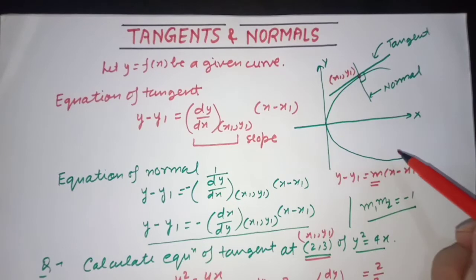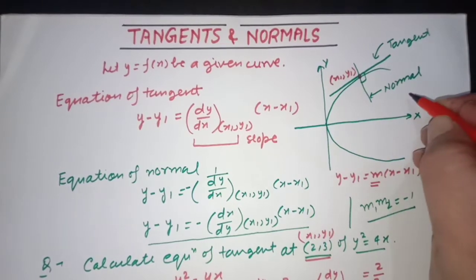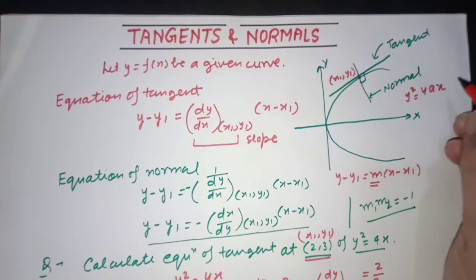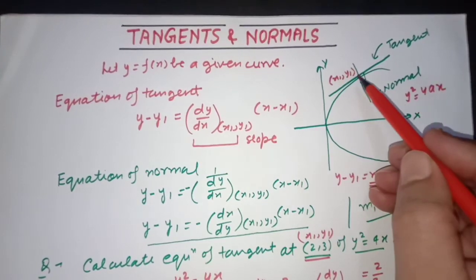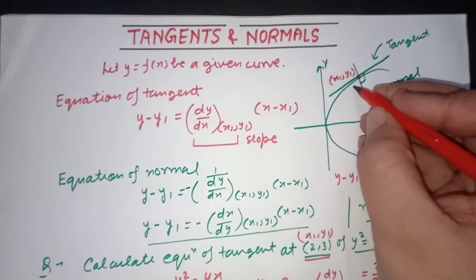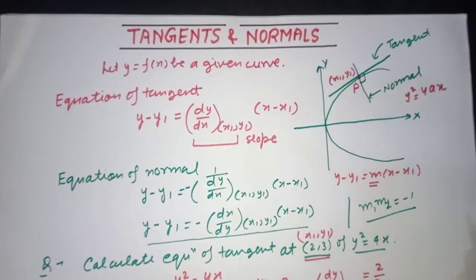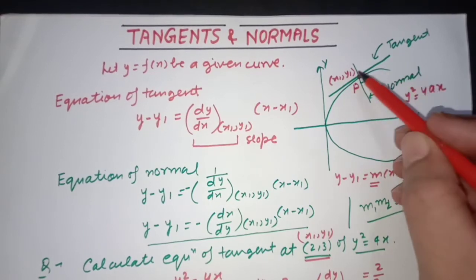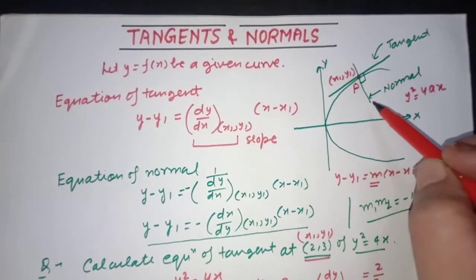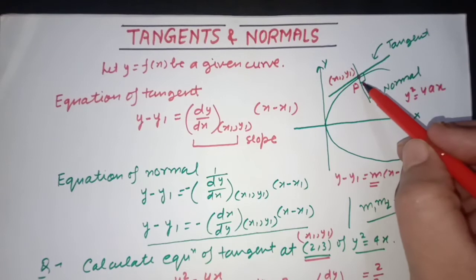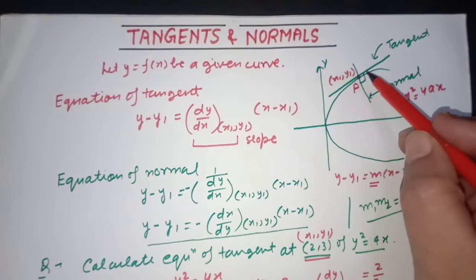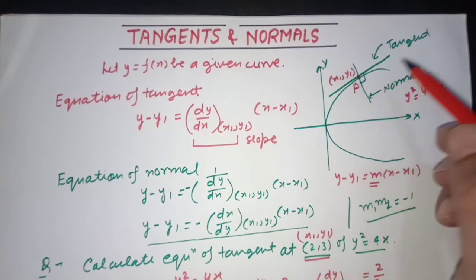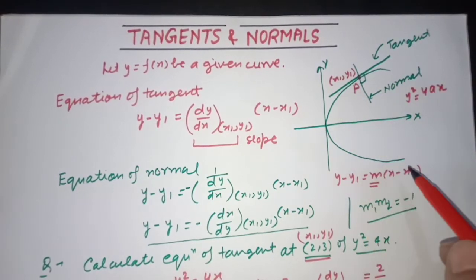Suppose we have a curve in the diagram — it is a parabola whose equation is y² = 4x. We see a point P whose coordinates are (x1, y1). At this point, one line is the tangent and another is the normal. Tangent and normal at any point on a curve are always mutually perpendicular.